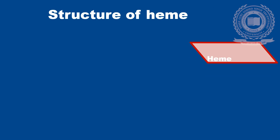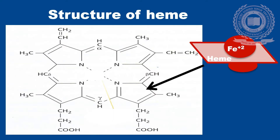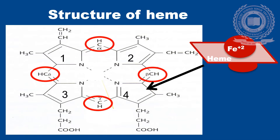Structure of heme. Heme is a planar structure which is formed by four pyrrole rings which are joined by methane bridges, and hence it is called the protoporphyrin ring.